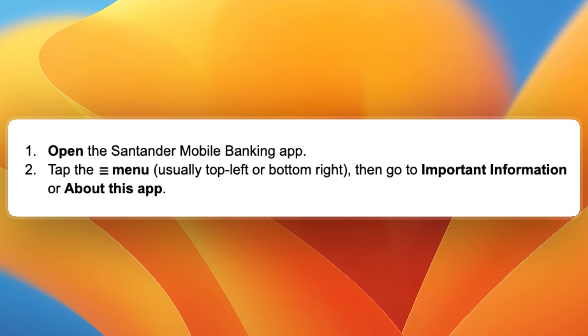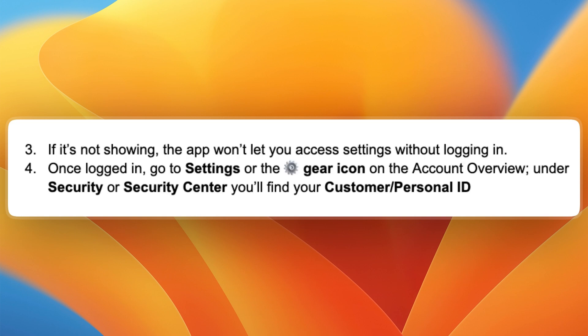From there, go to important information or about this app. If it's not showing, the app won't let you access settings without logging in, so make sure you are logged in. Then go to settings, which you could also find directly from the menu — it will be the gear icon on the account overview.